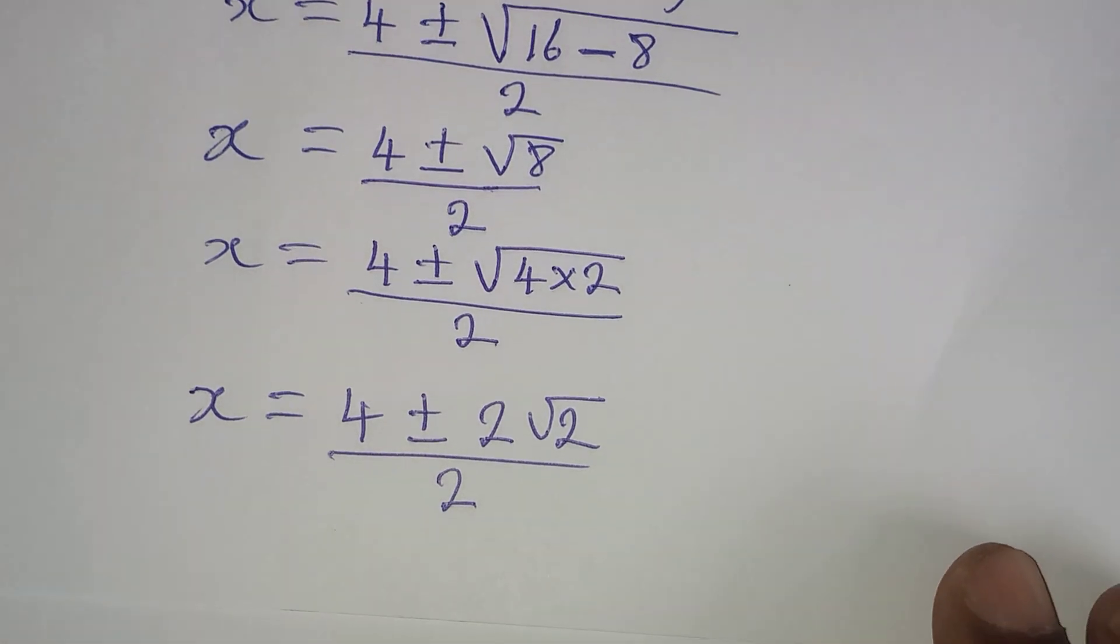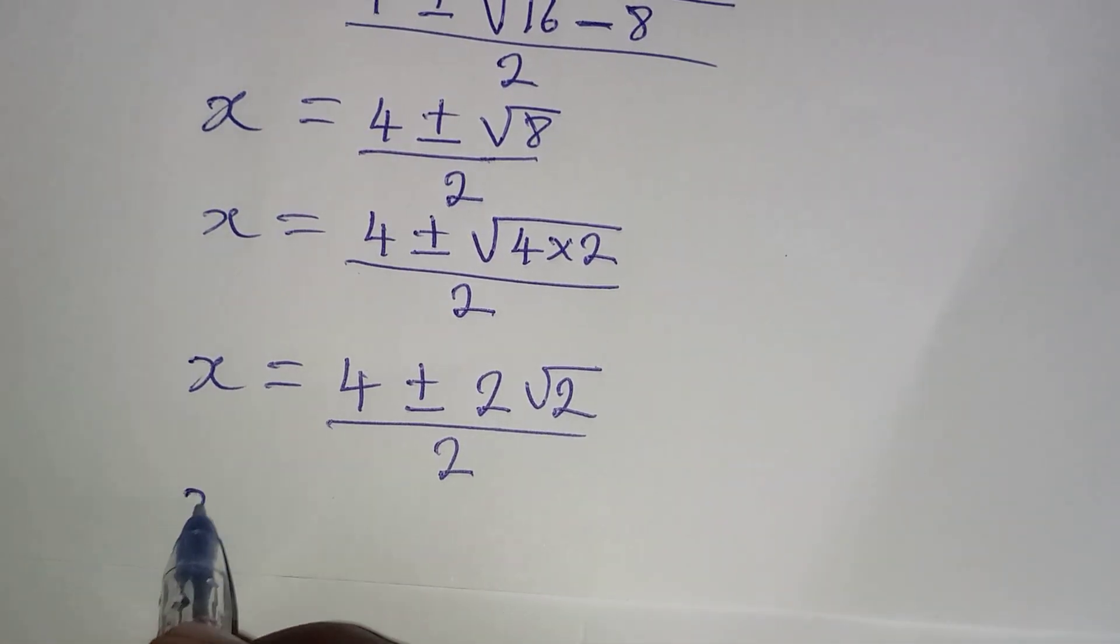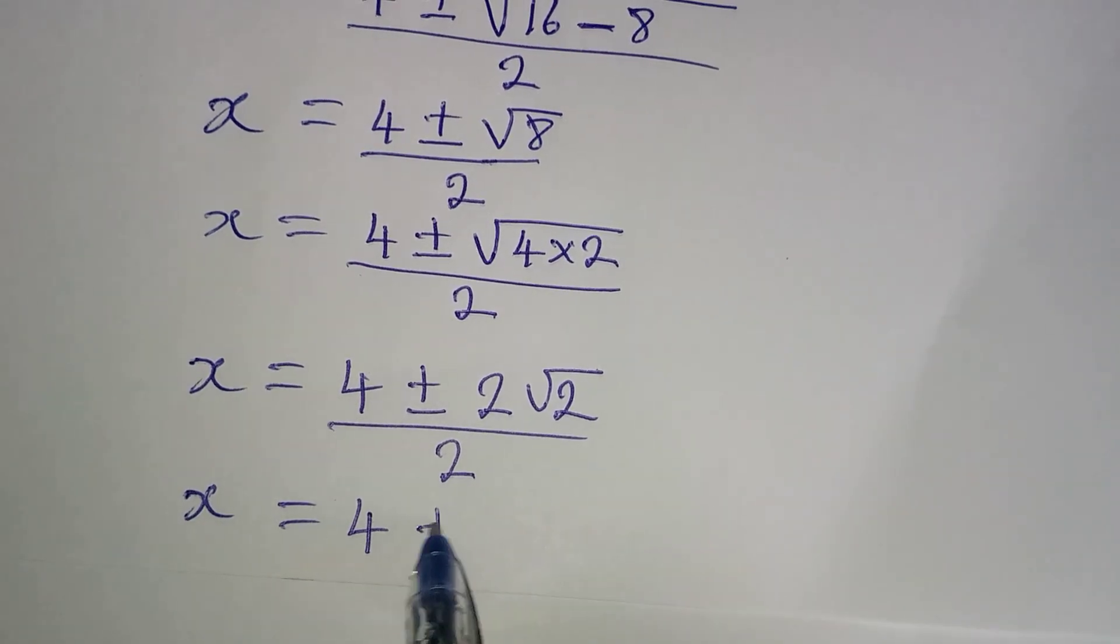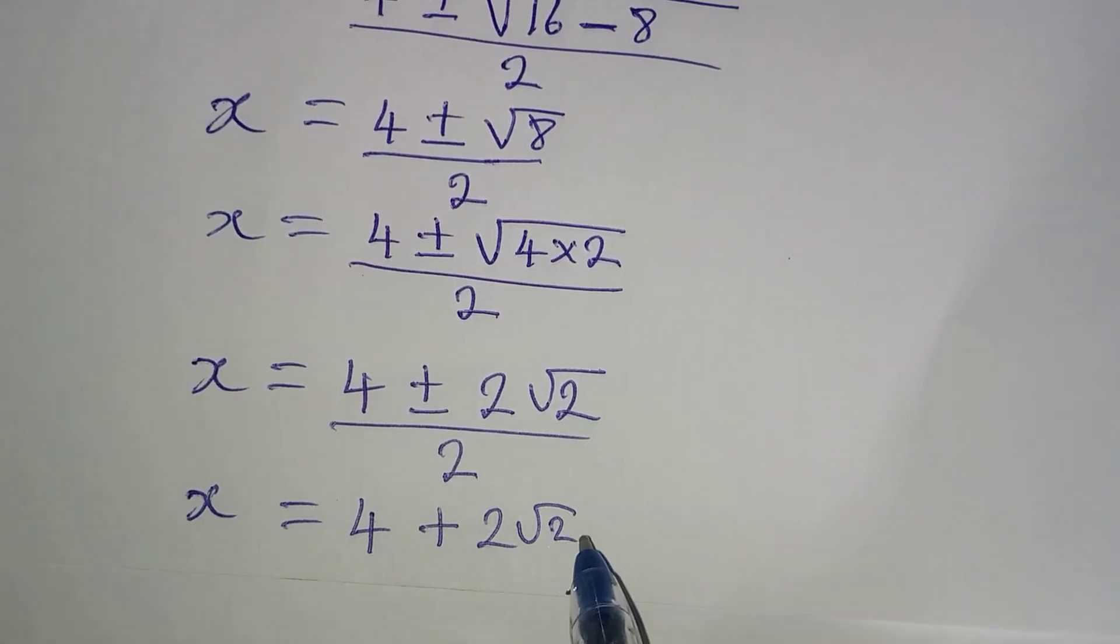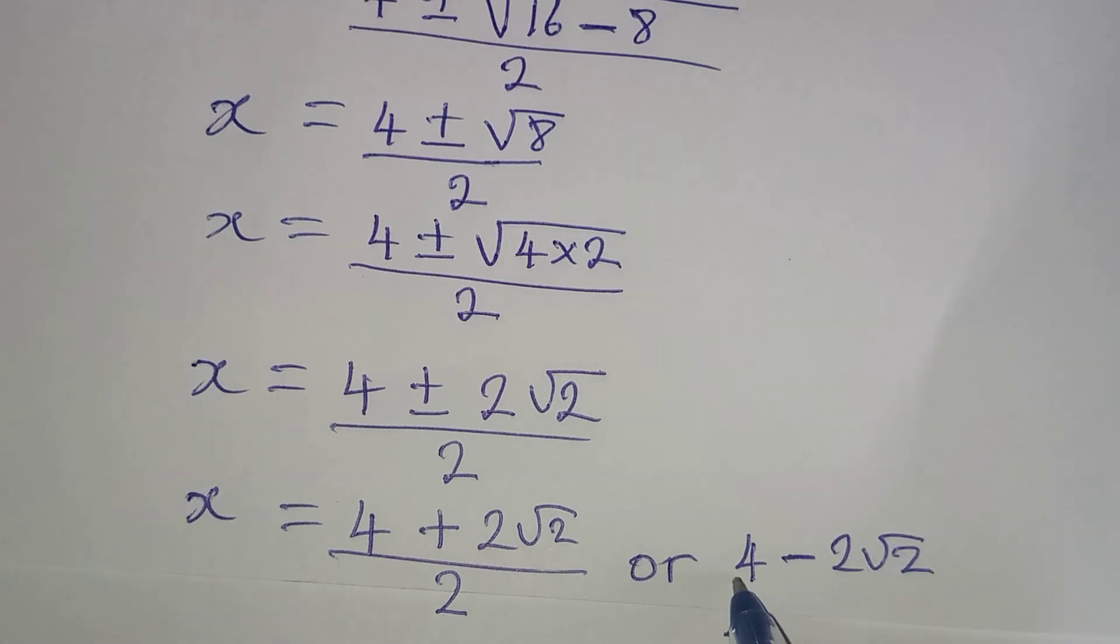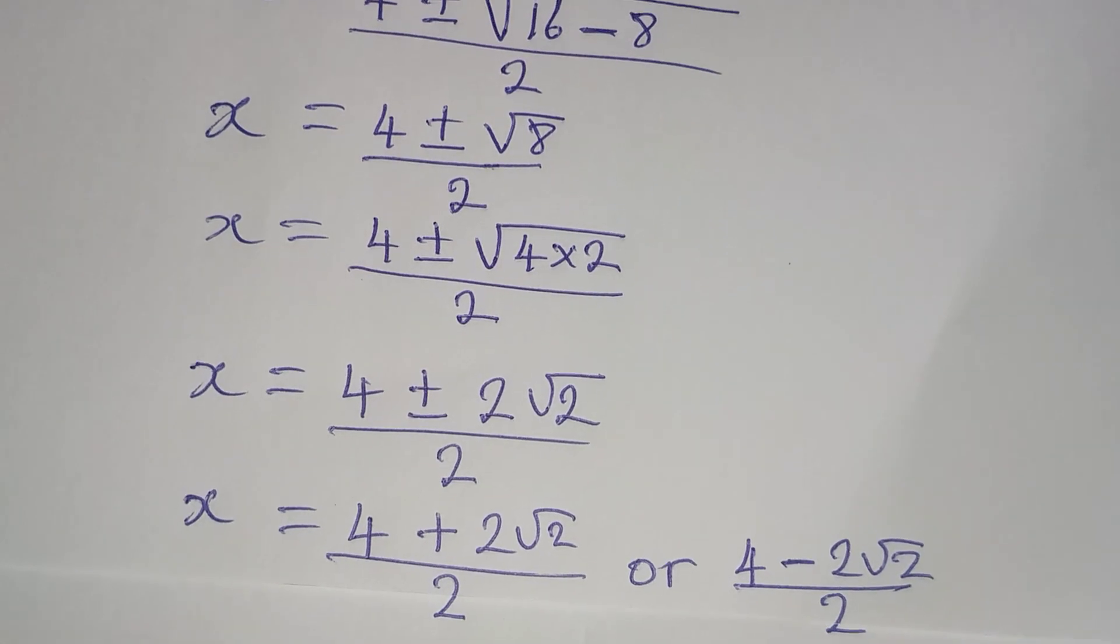But I can break this down again, because this is the same thing as x equal to 4 plus 2 root 2 all over 2, or I have 4 minus 2 root 2 all over 2.